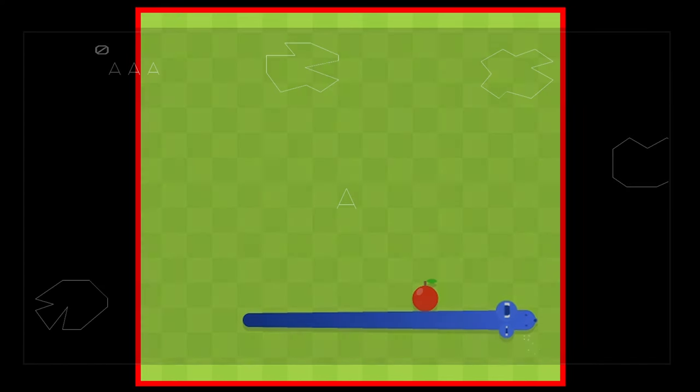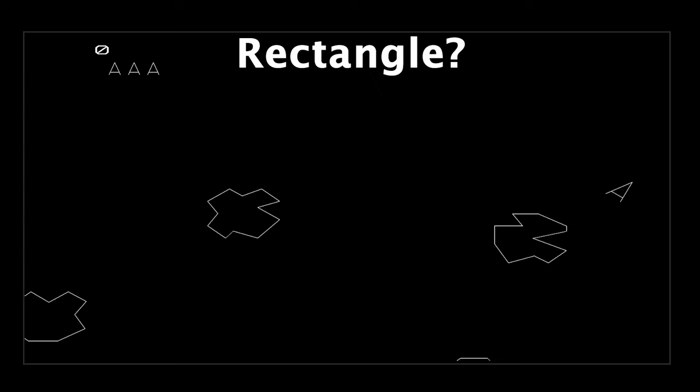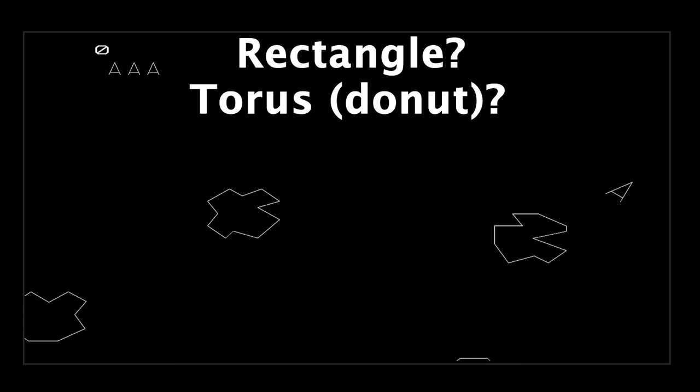Now what about this game of Asteroids? What would you say is the shape of this universe? Some people will say a rectangle, and others will say a torus or a donut, which will cause the people who said rectangle to say, 'what?' But it's true in a way.